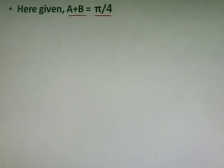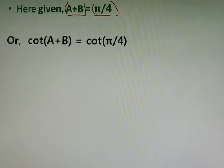Since the solution must be in the form of cot, in this question we will keep cot in front of both of these sides. So it will be as cot A plus B is equals to cot pi by 4.